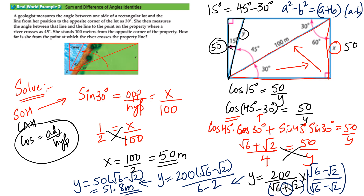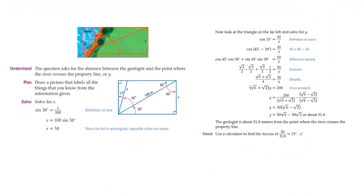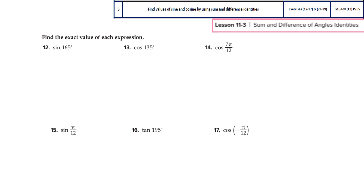Going back to the question — you wanted to find how far she is from the point at which the river crosses the property line. That length is y, so it is 51.8 meters. From this slide, I provide you the detailed answer key showing how you should present your answer. If this word problem comes in free response on a paper-based exam, you need to show all the steps in this manner. For questions 12 to 17, we will be using sine, cos, and tan sum and difference identities.